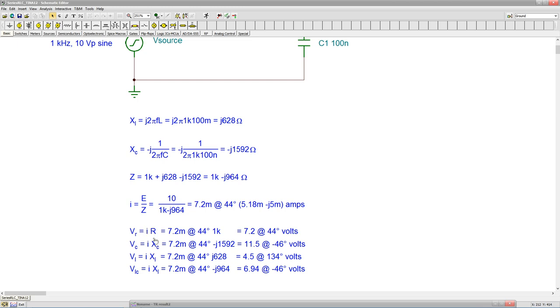All right, now we can find the various potentials across the individual components, just using Ohm's law, I times R. Multiply up your 7.2 mils at 44 at 1k. We get 7.2 volts peak, 44 degrees leading. Same thing for Vc, and we get 11.5 minus 46 degrees, in other words, lagging. And then the inductor, same deal, you only see 4.5 volts, 134 degrees.